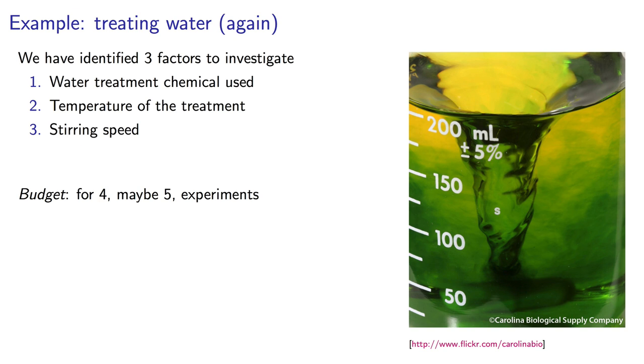The first is the chemical added to treat the water. The second is temperature, and the third is stirring speed. A full set of experiments would require eight runs, but if I can only afford four or five experiments, I should run a half fraction.